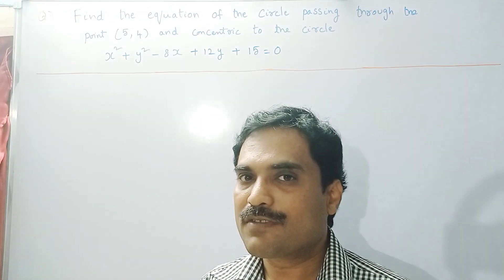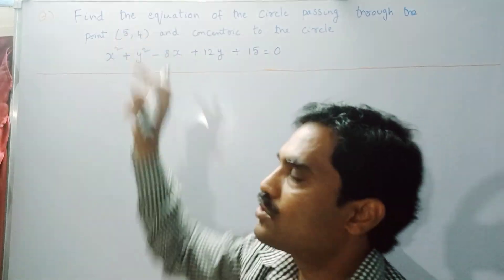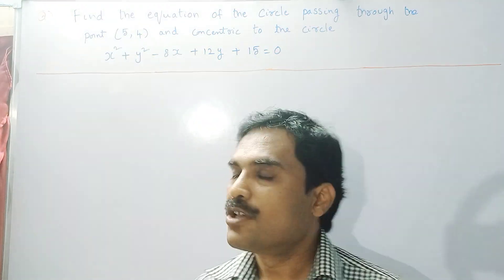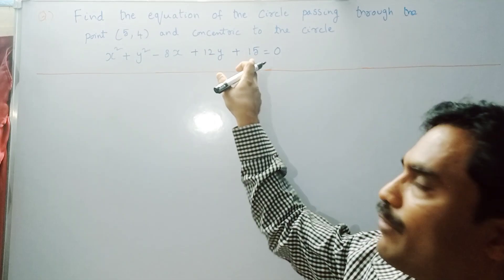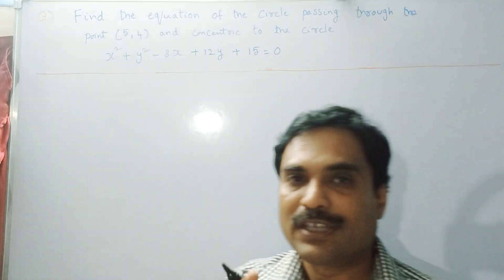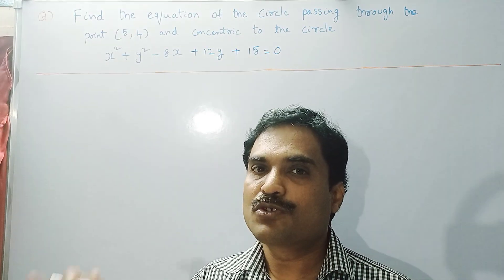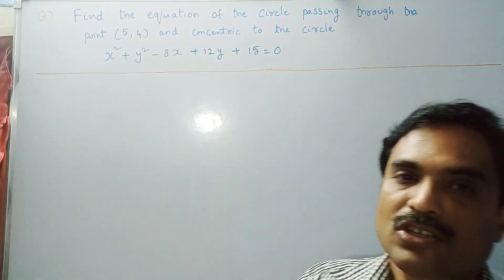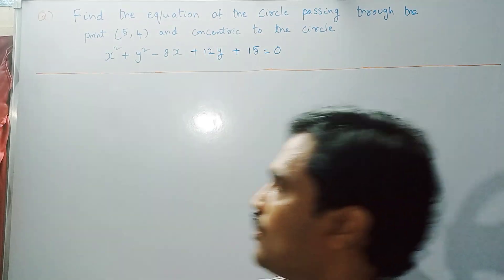The other condition given is that the required equation of the circle passes through the point (5, 4). By using this condition, we will find the value of k, and then substitute that value of k back into the equation to get the solution.